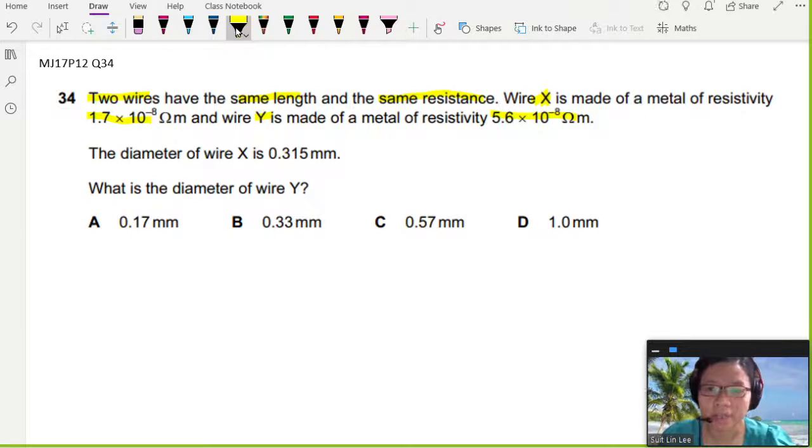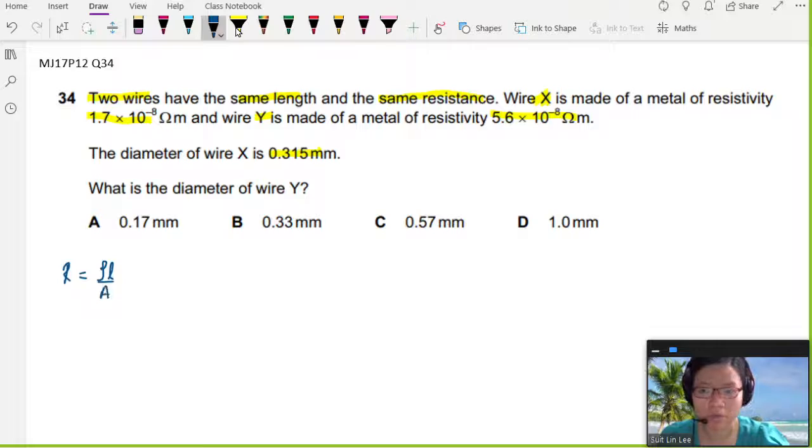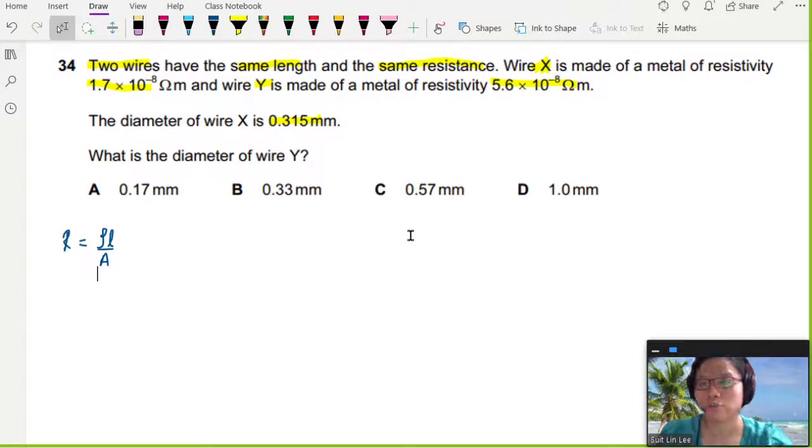Diameter of X is given. You are asked to find the diameter of Y. So whenever you see these kind of statements, you should recall that the resistance of a wire is given by the equation of resistivity times length over area. Now, using ratio is very useful, especially when solving questions like this. So let me show you why.